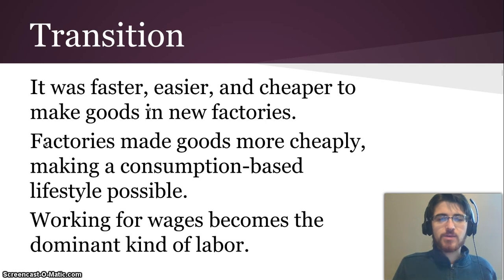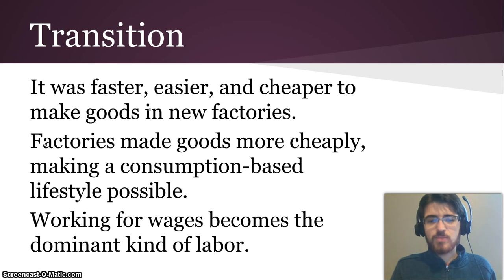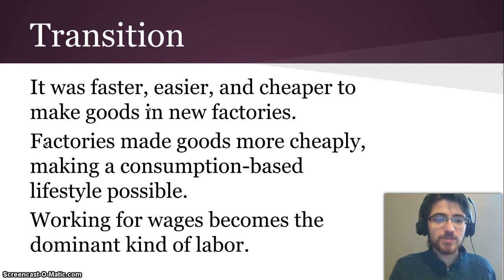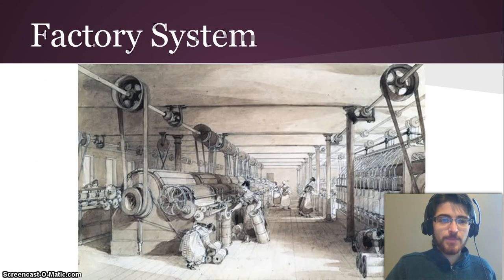Because they were making goods more cheaply in factories, instead of having to make everything yourself, you could just sell your surplus food or some extra things that you made and then buy all the things that you need. That's a consumption-based lifestyle, just like we have today, where you work a job and go buy the stuff you need. Working for wages, as a result, becomes the dominant kind of labor, and it still is today.